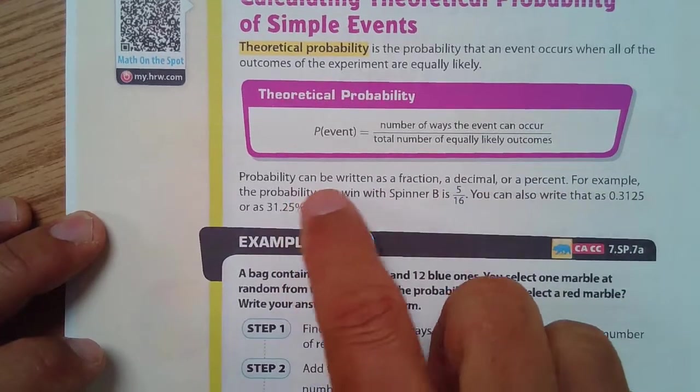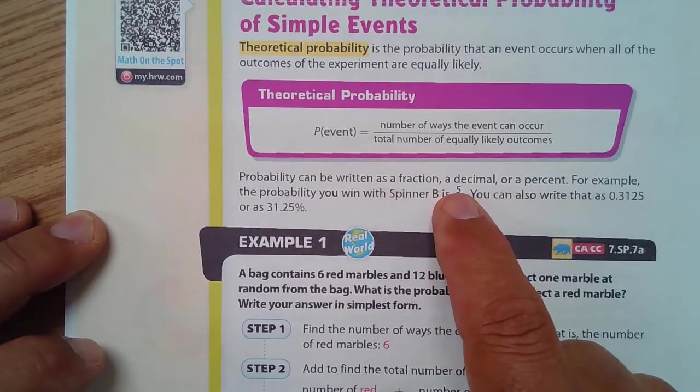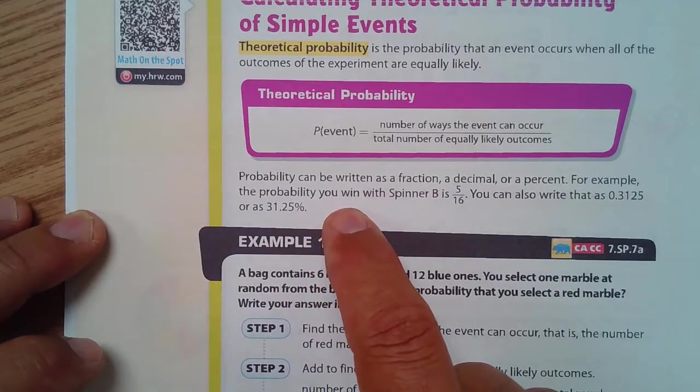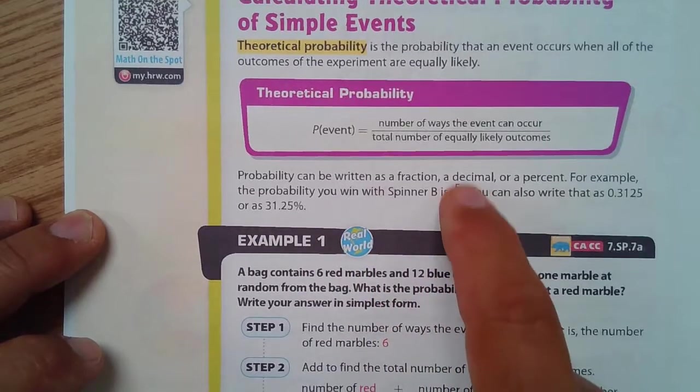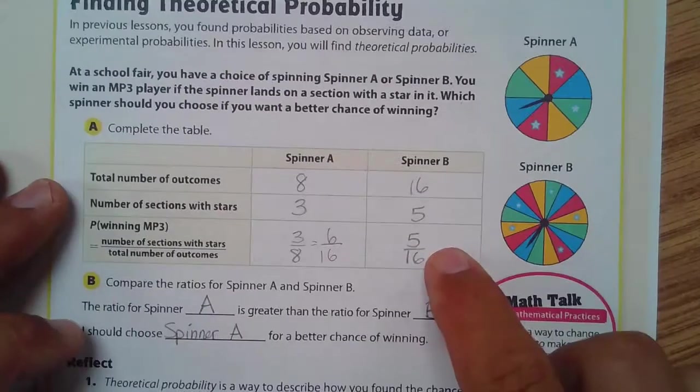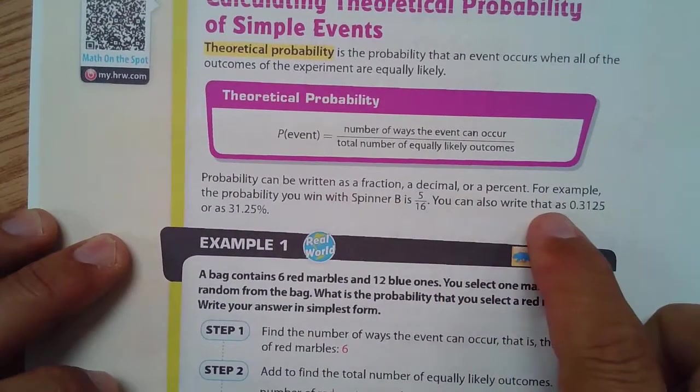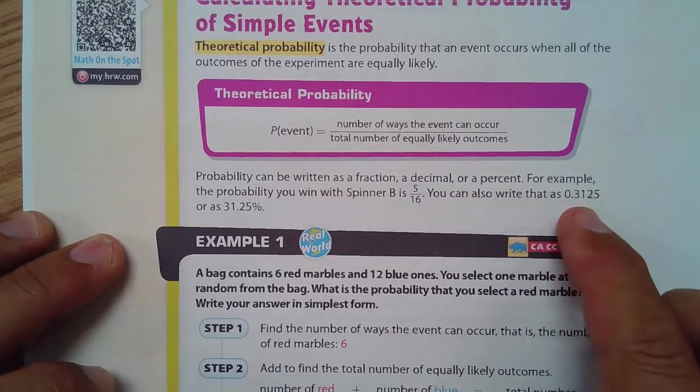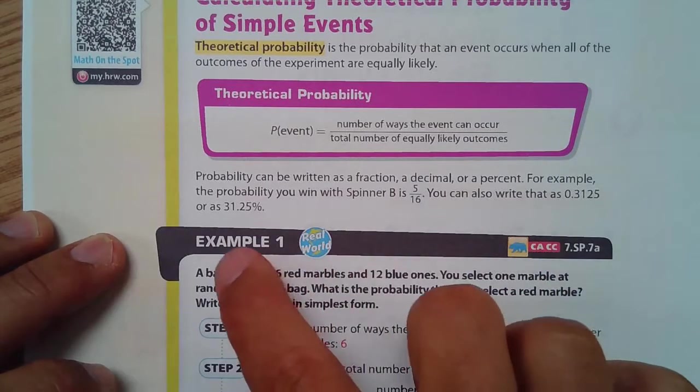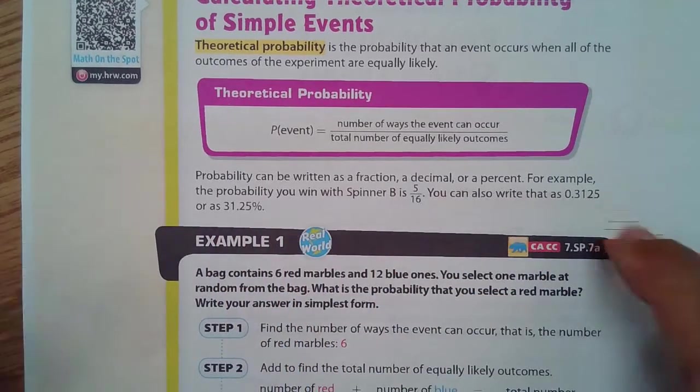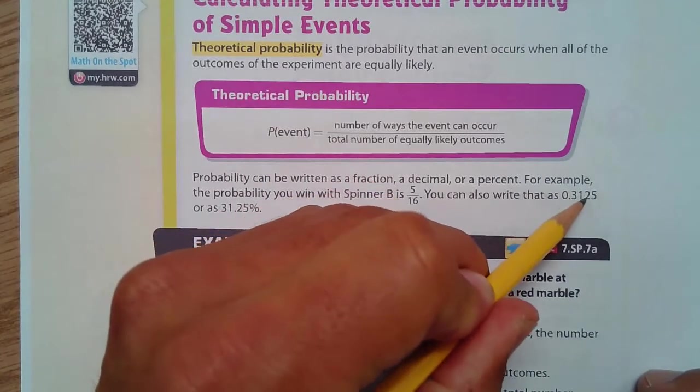Probability can be written as a fraction, a decimal, or a percent. For example, the probability you win with spinner B is 5 out of 16, which is back to this right here, was 5 out of 16.